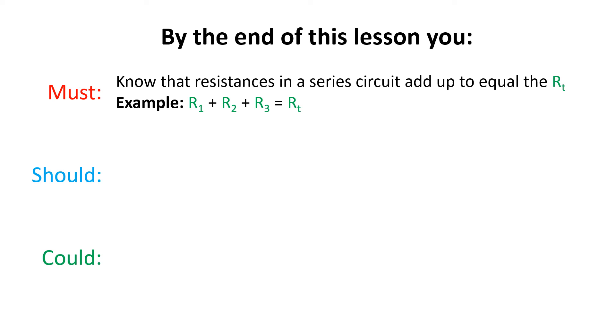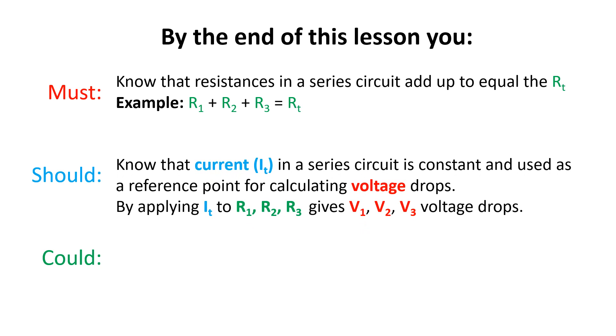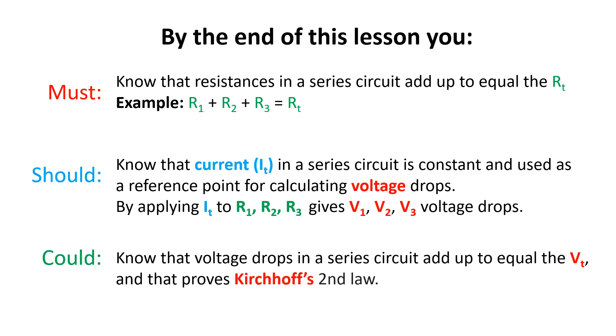Finally, let's remind ourselves of the lesson objectives. You must know that resistances in a series circuit add up to equal the resistance total or RT. For example, R1 plus R2 plus R3 equals resistance total. You should know that the current flowing in a series circuit is constant. As such, I will refer to that as the current total or IT, and we use that as a constant reference point to calculate voltage drops across the individual resistances. Some of you could know that all the voltages in a series circuit add up to equal the voltage total or VT, and that proves Kirchhoff's second law.